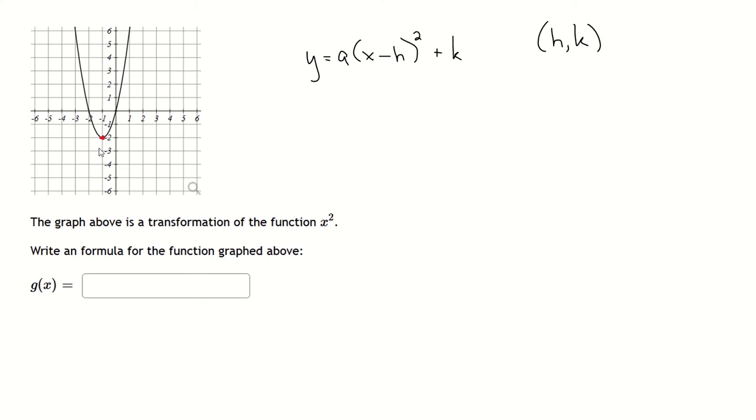Okay, so in this case we know that the vertex is right here at negative 1, negative 2. So I know that for this function up here I can rewrite it like this.